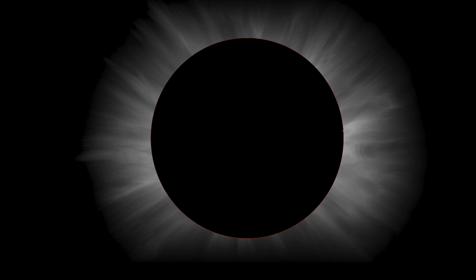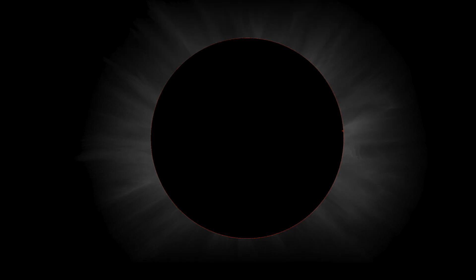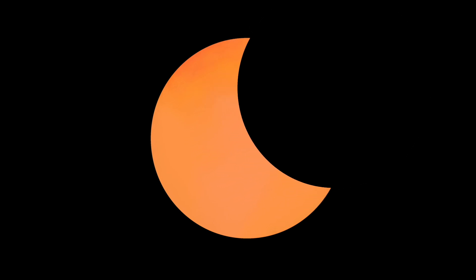Total solar eclipses last only a few minutes. This is because the moon is always revolving around Earth. As the moon keeps on moving, the sun starts to reappear around the moon, and eventually the sun returns to its usual round and sunny self.